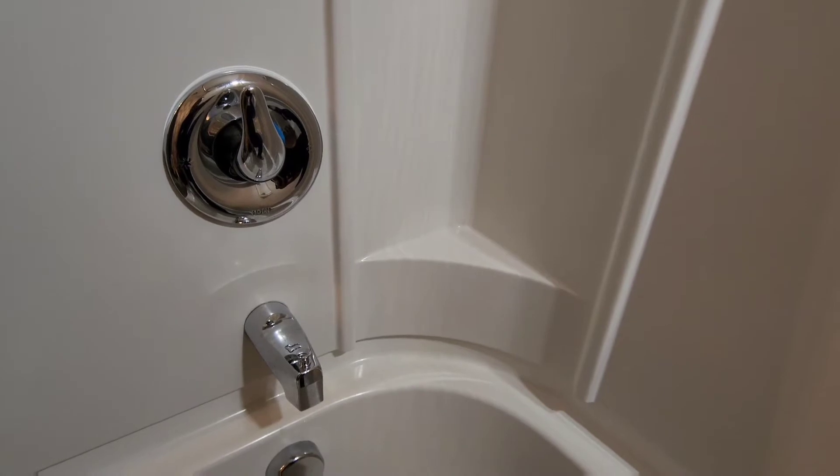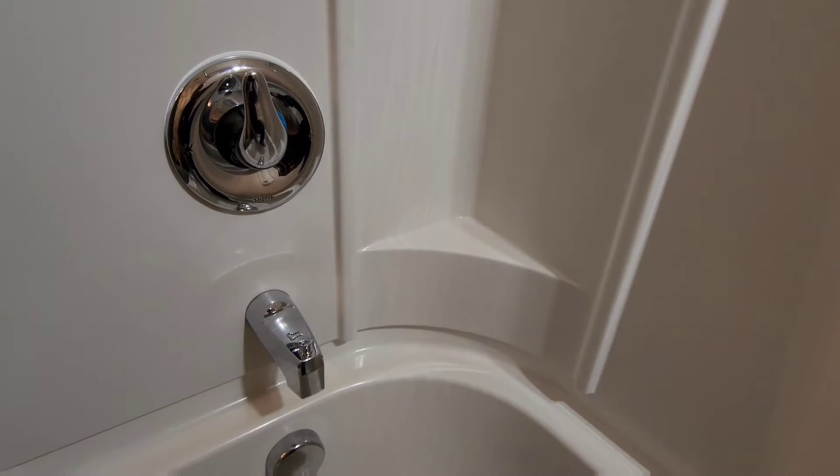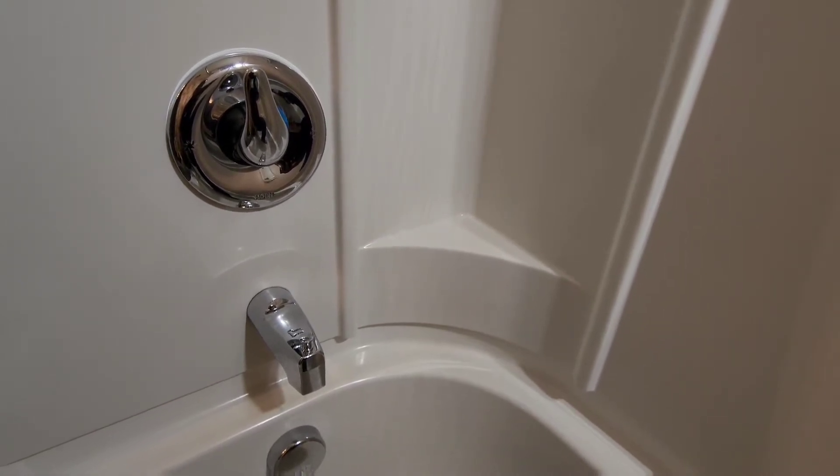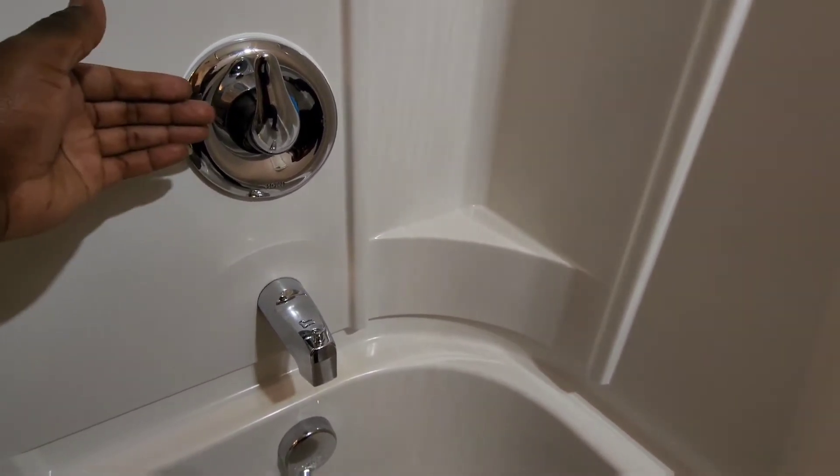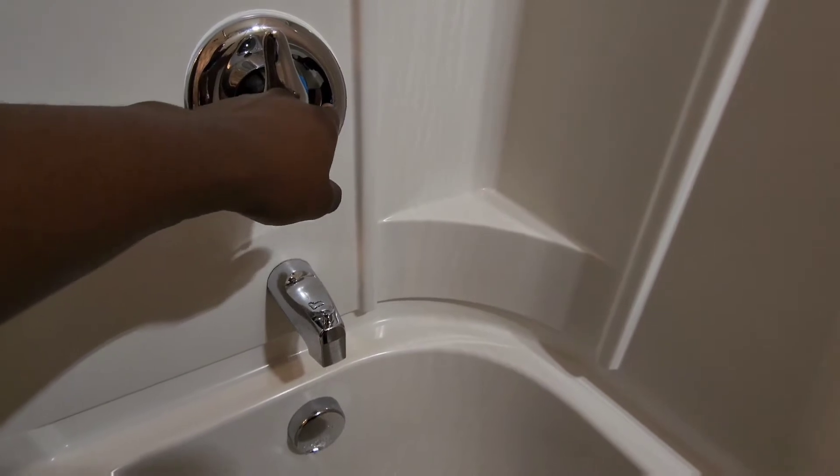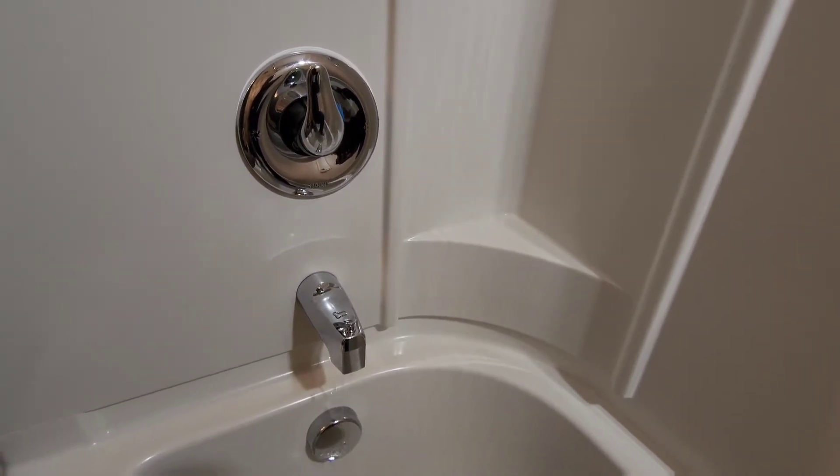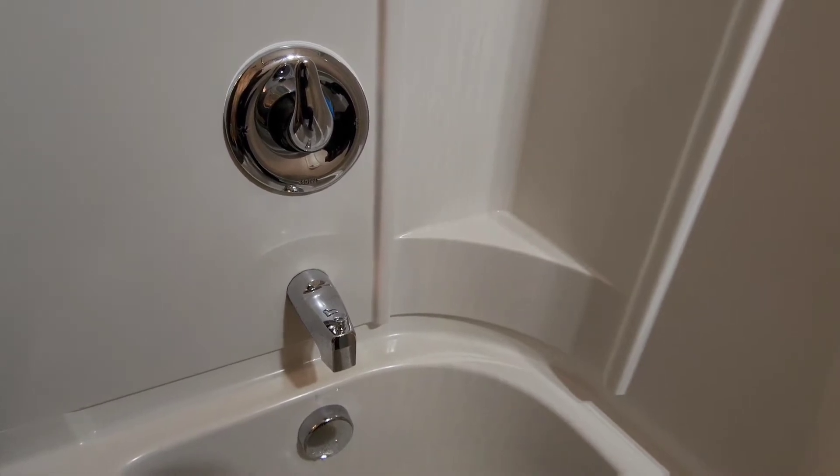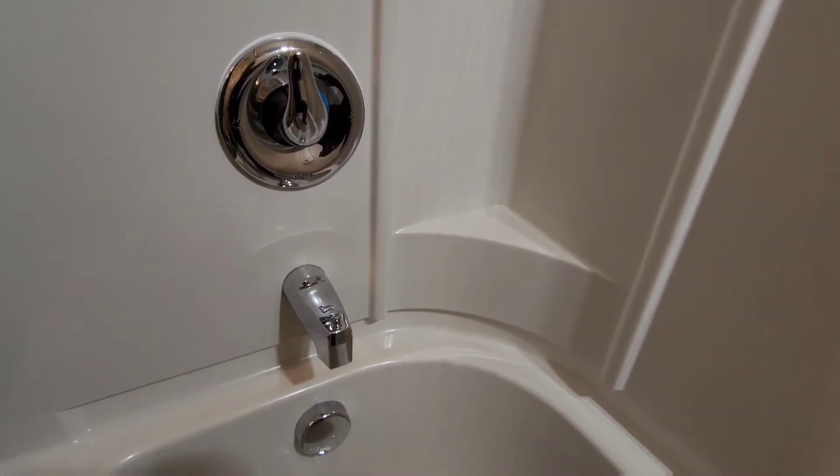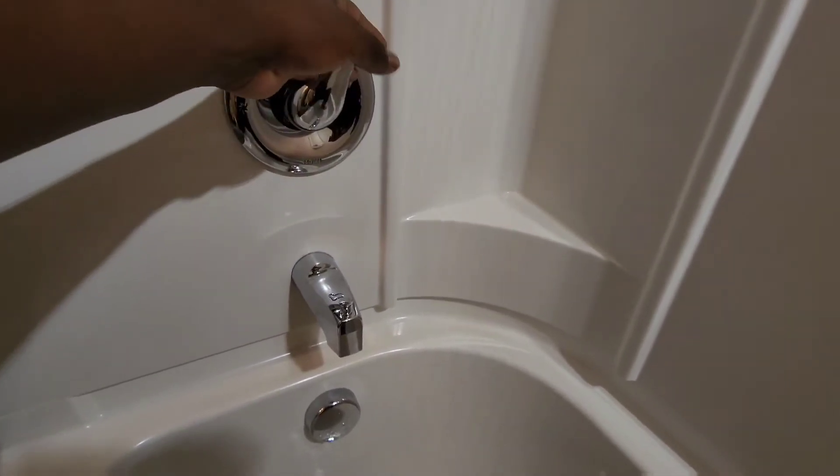The problem I'm having with the handle is the fact that it doesn't turn the water off. Right now I have the main shutoff for the water in the garage turned off for the whole house, just because this handle does not have an on-off valve behind this fixture to turn the water off just for the bathtub. So what I'm going to do is have someone turn the water on to show you that water is going to continuously pour from the faucet, and no matter how much I turn this handle, it will not turn off.